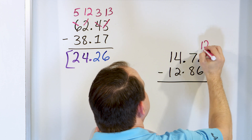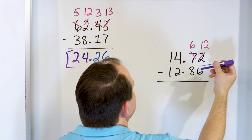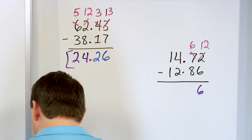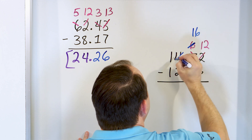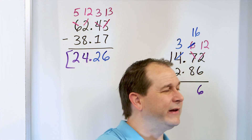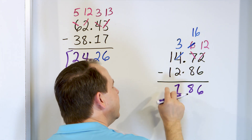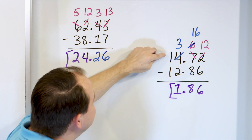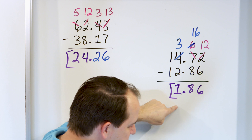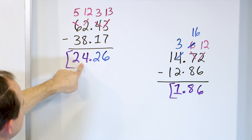We cannot do 2 minus 6, so we make this a 12 and borrow to make that a 6. 12 minus 6: go down — 11, 10, 9, 8, 7, 6. 12 minus 6 is 6. What is 6 minus 8? Can't do that either, so this becomes a 16 — borrow, making that one a 3. 16 minus 8: go down — 15, 14, 13, 12, 11, 10, 9, 8. We land on 8. 3 minus 2 is 1, and 1 minus 1 is 0, but we don't have to write leading zeros. We get an answer of 1.86. So if you had $14.72 and subtracted $12.86, what you have is $1.86. Similarly, $62.43 minus $38.17 leaves $24.26.